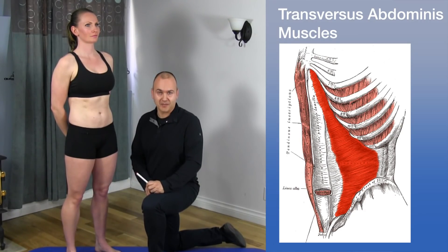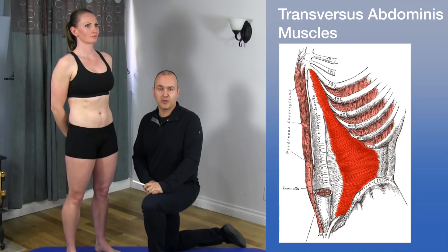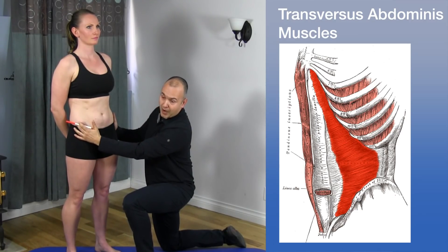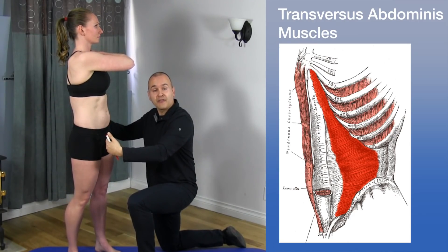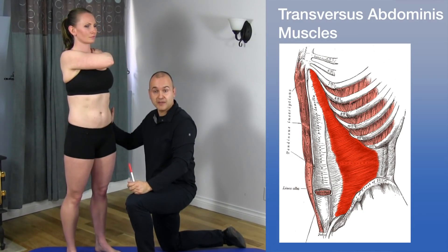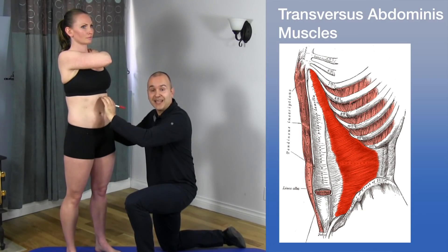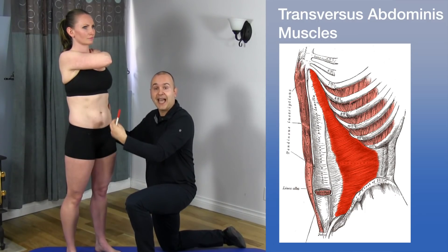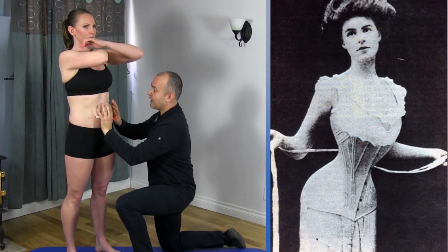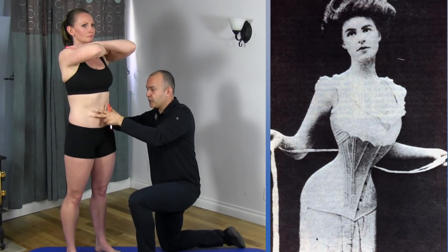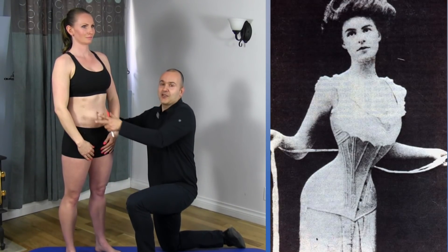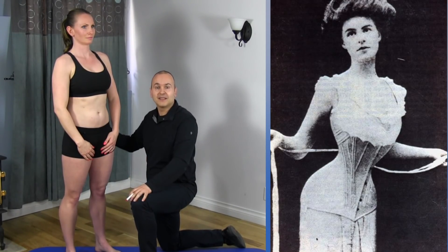The transverse abdominis is the deepest of the four abdominal muscles. It attaches inferiorly to the inguinal ligament and iliac crest, posteriorly to the five lumbar vertebrae, superiorly to the inner surface of the last seven ribs and interdigitates with the fibers of the diaphragm, and anteriorly to the linea alba. This muscle is known as the 'corset muscle' because when contracted it helps to pull things in, similar to how a corset squeezes the torso.